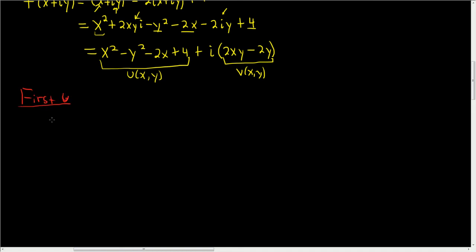Let's start with u. We'll take the second partial derivatives of u with respect to x and with respect to y. Starting with x: the partial of u with respect to x, holding y constant, is simply 2x minus 2, because the derivative of y squared and 4 is zero. Taking the partial derivative again, we end up with 2.